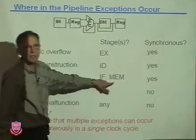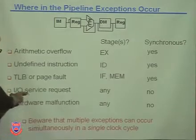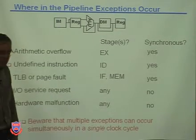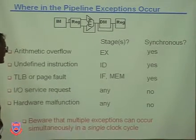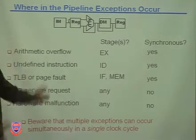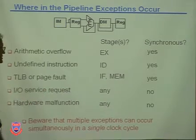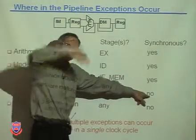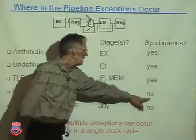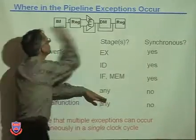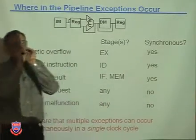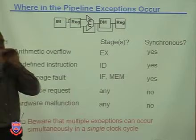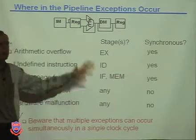Page faults can happen in the fetch stage or the memory stage, since those are where we go to memory. An IO service request is where an IO activity needs to happen and you didn't cause it — so it's obviously not synchronous, it's an external interrupt, and it can happen at any time.